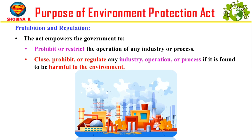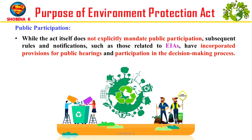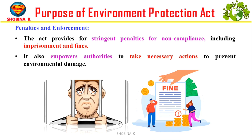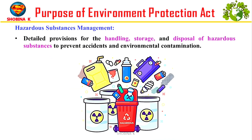Prohibition and regulation: this law gives the government the power to stop or control industries or processes that are harmful to the environment. Public participation: while the main law doesn't mention public involvement, other rules like those about Environmental Impact Assessment allow the public to share opinions and participate in decisions. Penalties and enforcement: this law sets out penalties for violations of environmental regulations and provides mechanisms for their enforcement. Hazardous substance management: EPA addresses the management and regulation of hazardous substances to minimize their impact on the environment and public health.